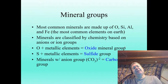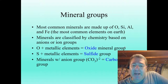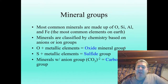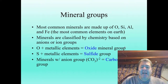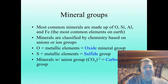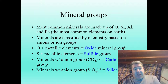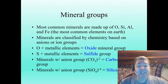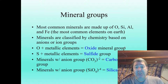Then there are minerals with an anion group called the carbonate anion — that's carbon and oxygen (CO3). These are the carbonate group and will often fizz in acid. And then we have a group with the anion group SiO4 — silicon and four oxygens — the silicate group.